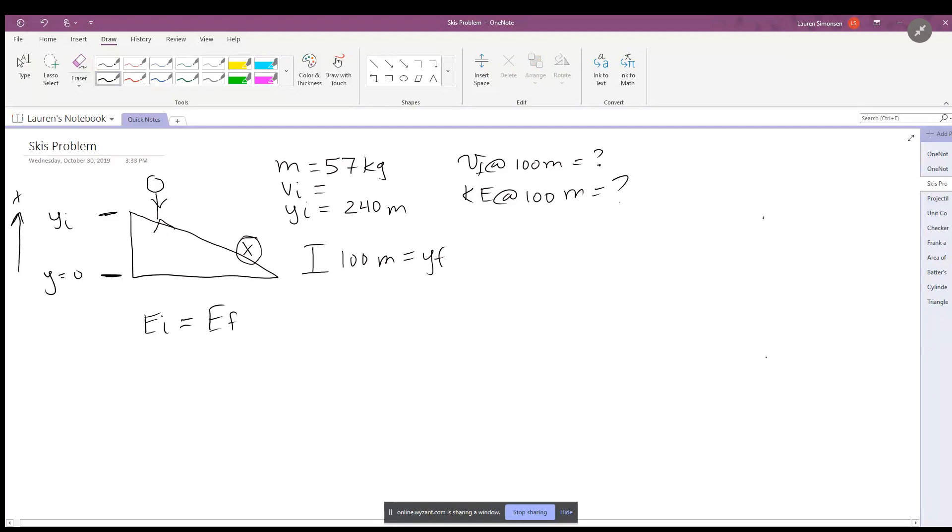We have two types of energy here: we have potential energy and kinetic energy. The kinetic energy is one half m v_i squared plus potential energy m g y initial, the height, is equal to the kinetic energy one half m v_f squared, which is the final kinetic energy, plus the final potential energy.